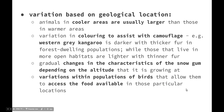We also have variation based on geographical location. Animals in cooler areas are usually larger than those in warmer areas. Variation in colouring can assist with camouflage. For example, the western grey kangaroo is darker with thicker fur in forest-dwelling populations, while those that live in more open habitats are lighter with thinner fur. This is variation within that grey kangaroo population — not different species, just different variations of individuals within the same species.